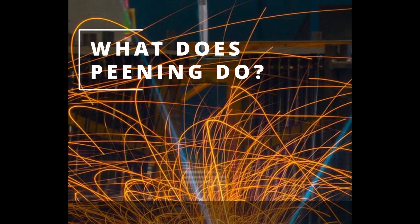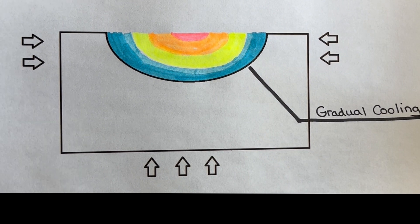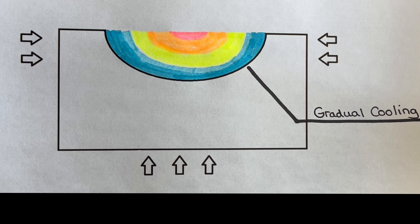What exactly does peening do? The purpose of peening is to mechanically stress relieve the weld to prevent cracking.